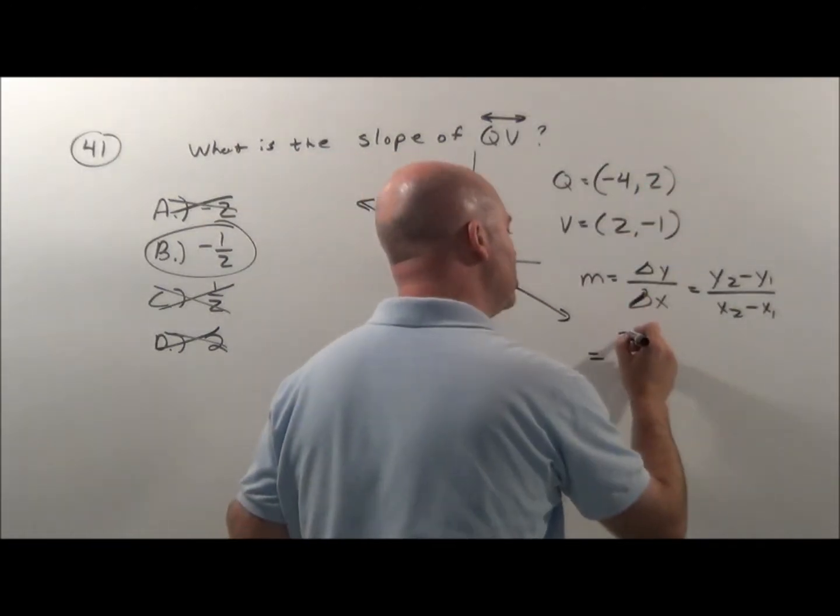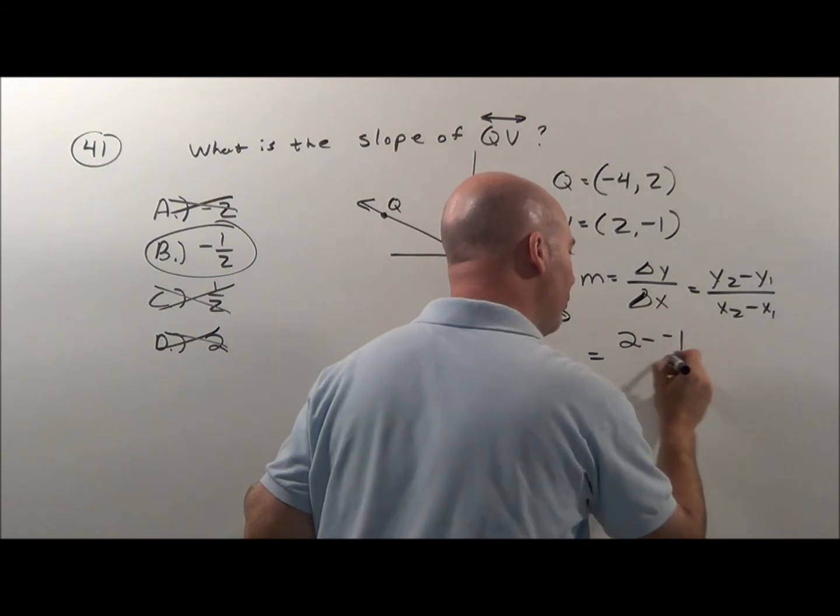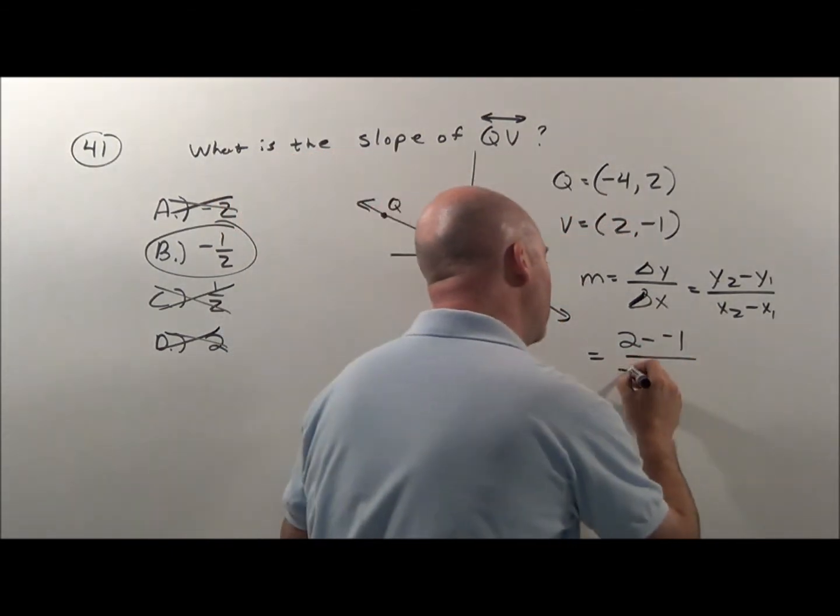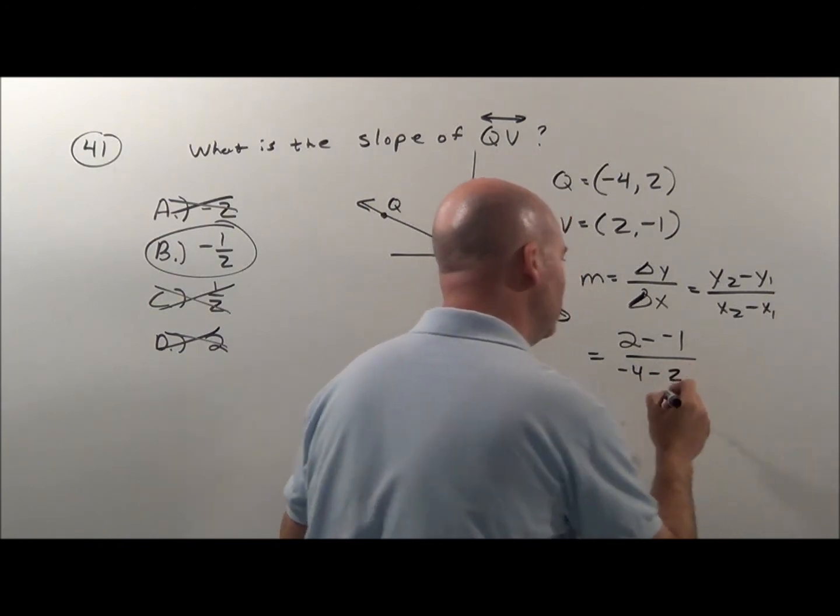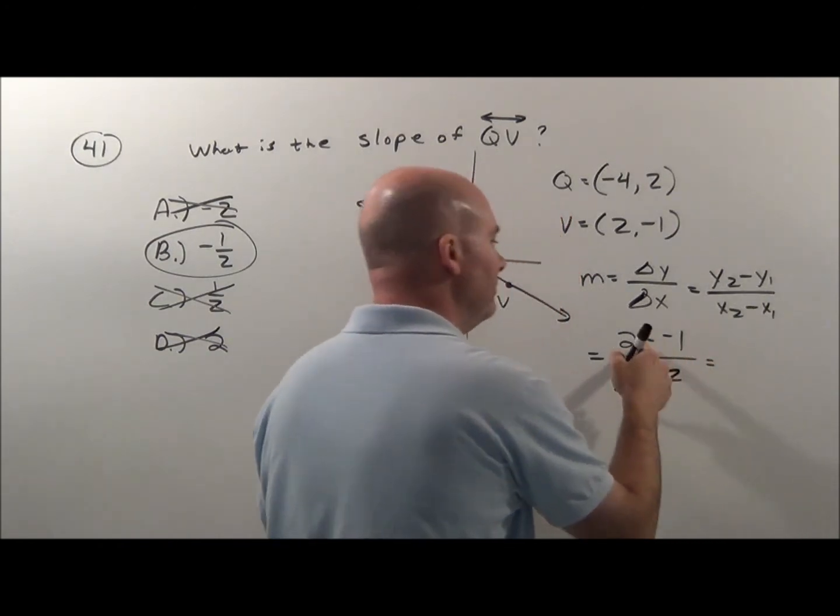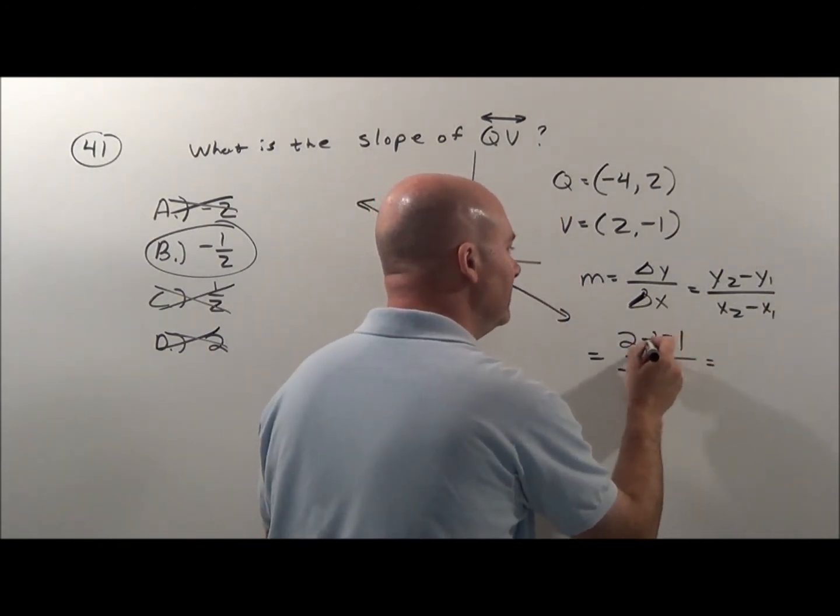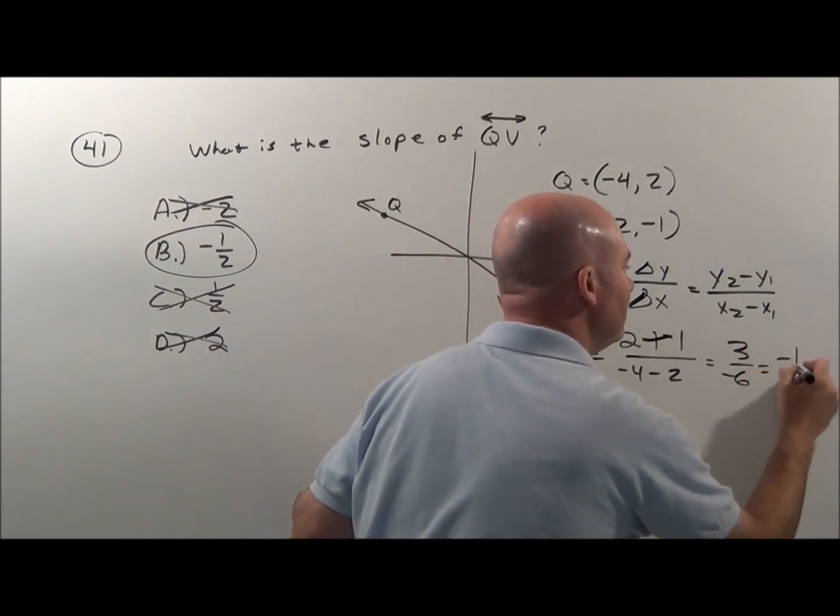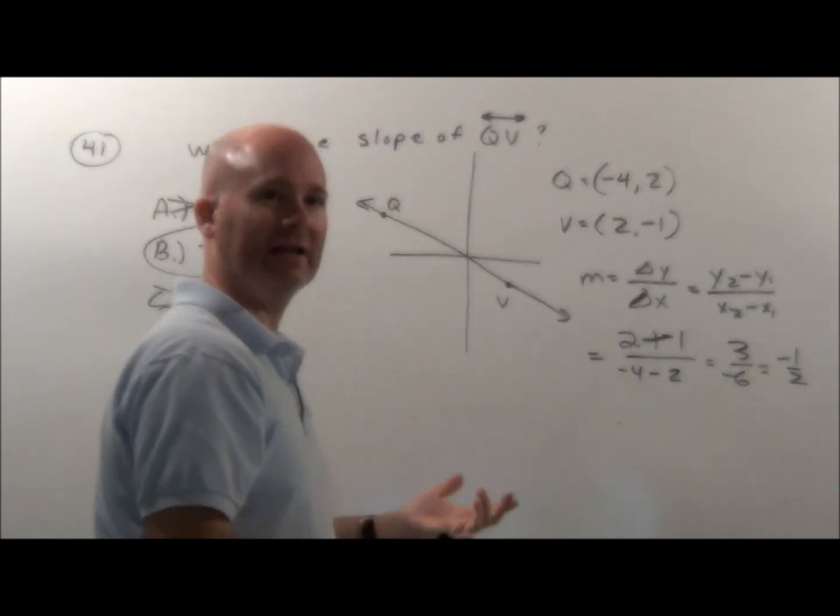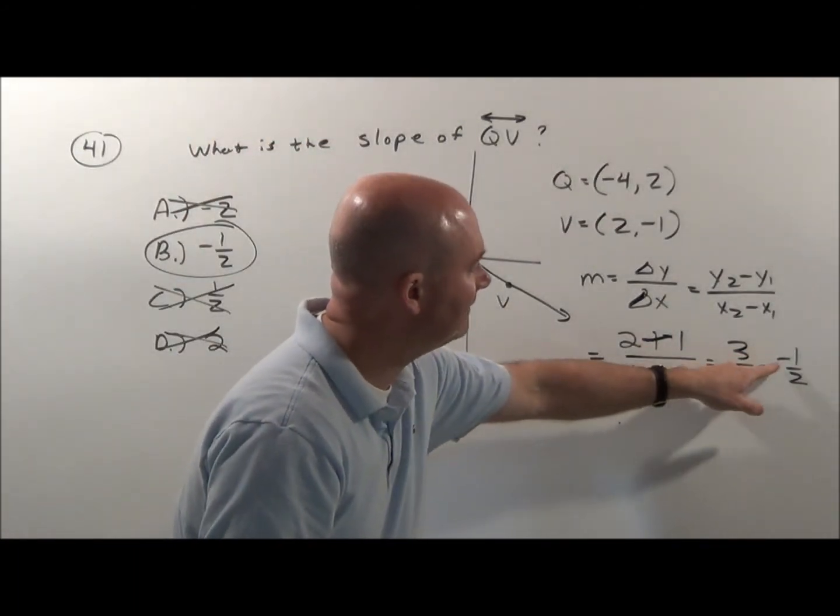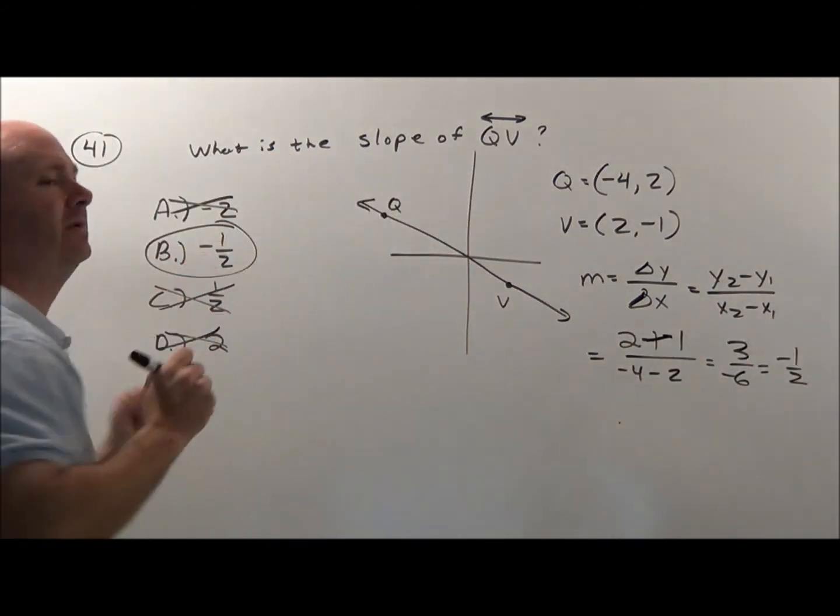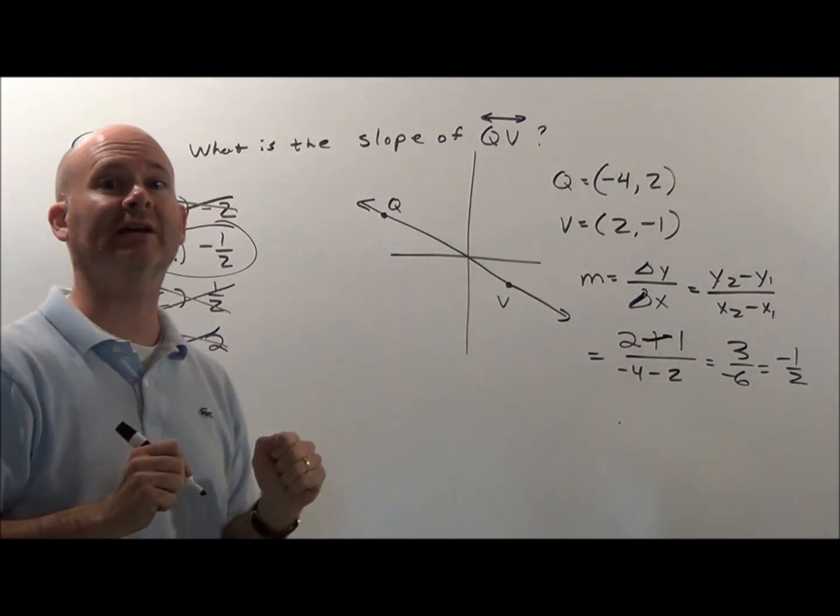Subtract our y's. I'm going to go 2 minus negative 1, that will change to plus in a minute. Negative 4 minus 2. This gives us, remember that changes to plus, 2 plus 1 is 3. Negative 4 minus 2 is negative 6. And that simplifies to negative 1/2 because a positive divided by a negative is a negative answer. So it's negative 1/2, choice B. We were correct with our thinking.